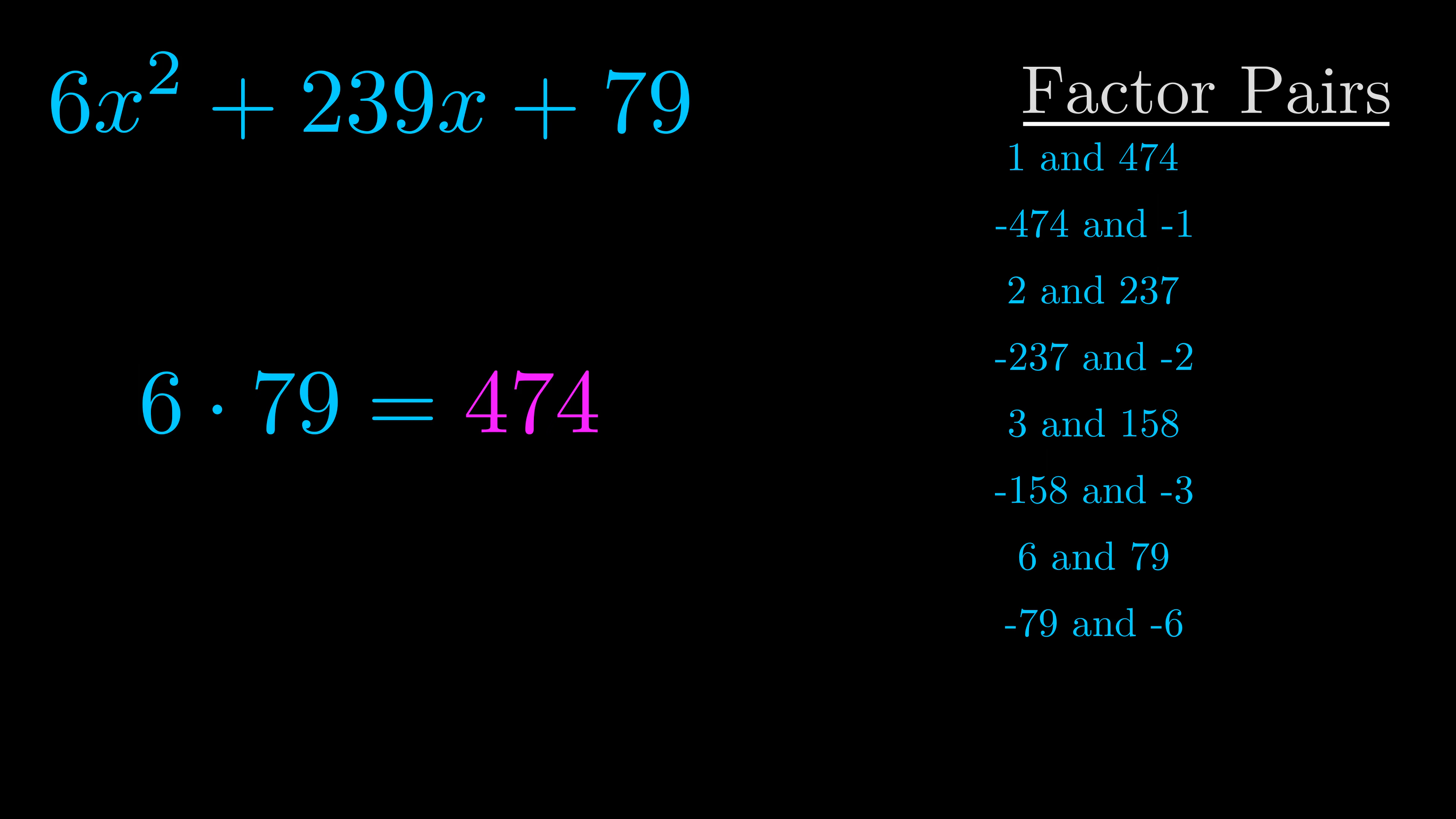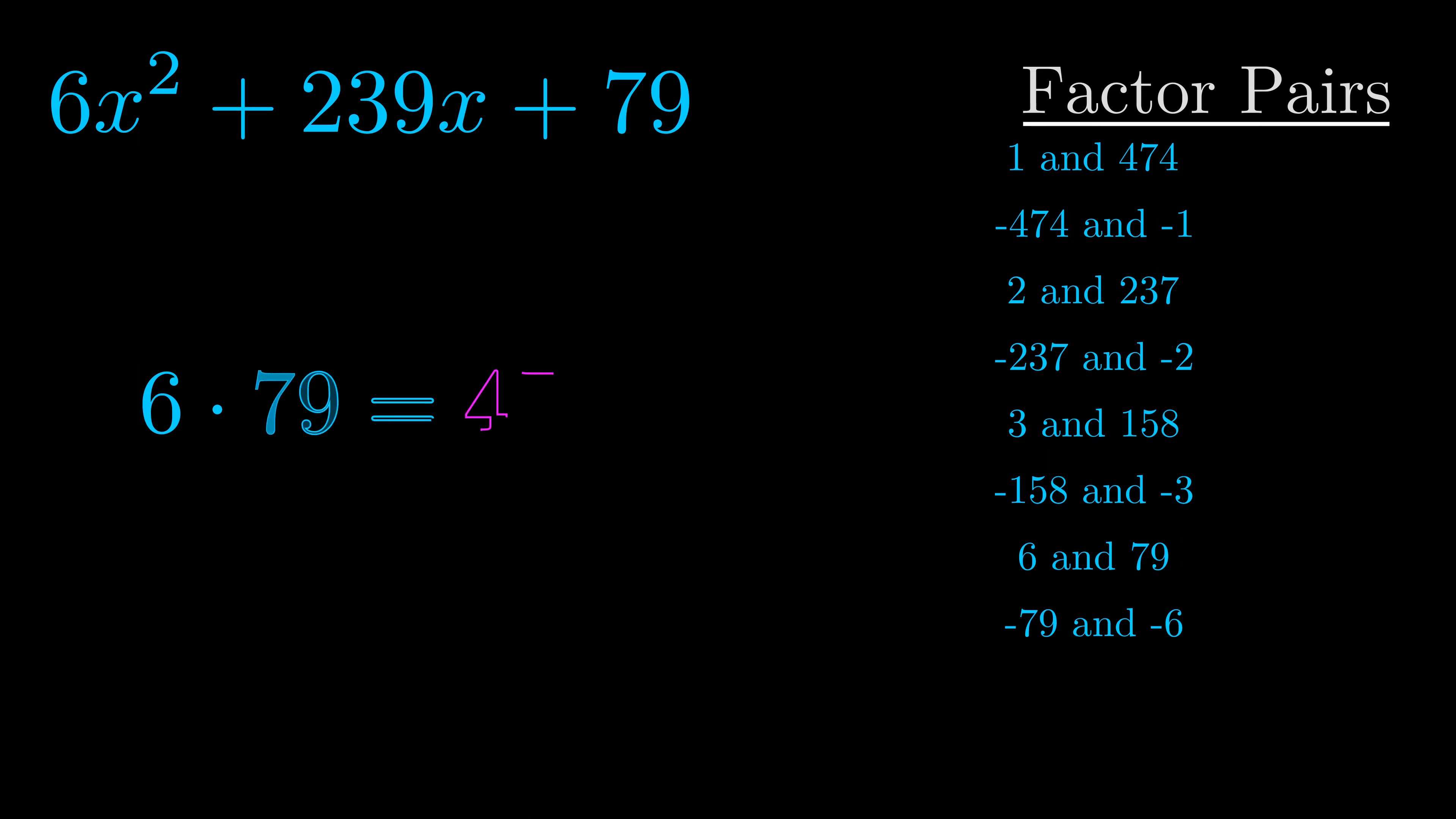Now once you have these factor pairs the goal is to find which of these pairs adds to the b value. The b value is the coefficient on the x term. That's the middle term, the one that we haven't done anything with yet. And really this is the only factor pair that we need.